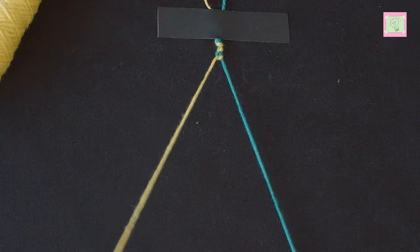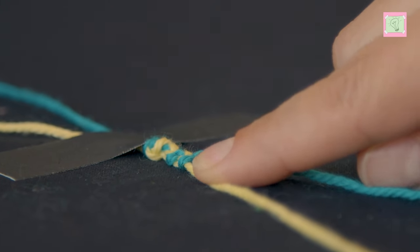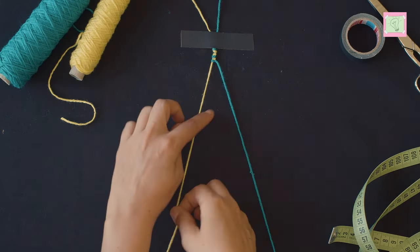If you're not sure which color is your turn to tie, you can simply look at which color the last knot is tied. The other is then the turn.